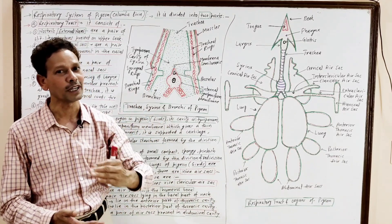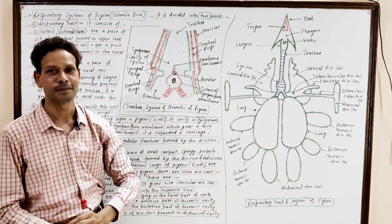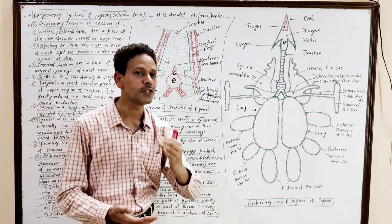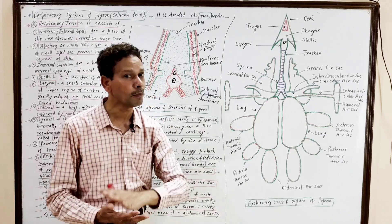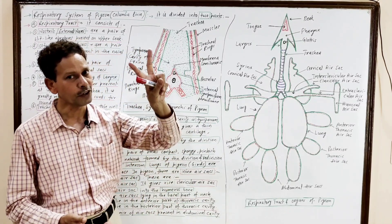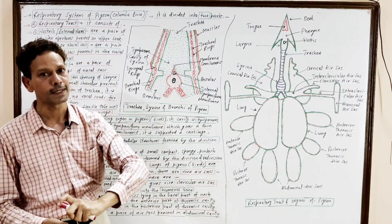This is all about the respiratory system of Pigeon — Columba livia. The entire system is divided into two parts: the respiratory tract and the respiratory lungs.